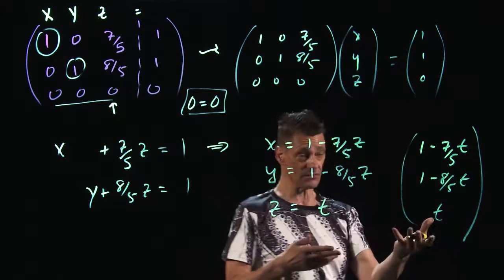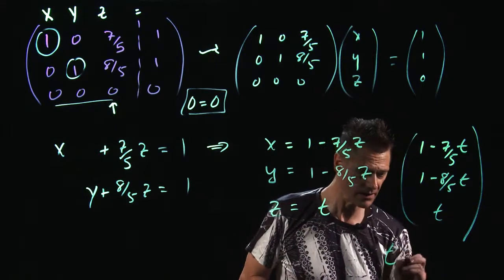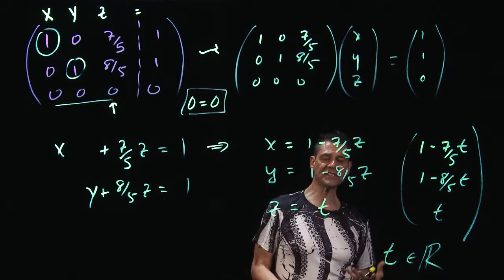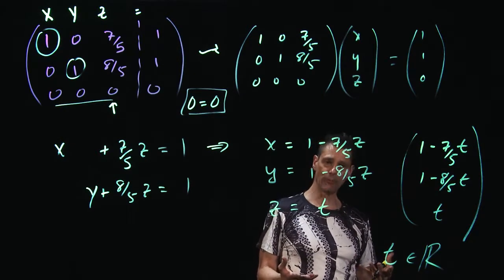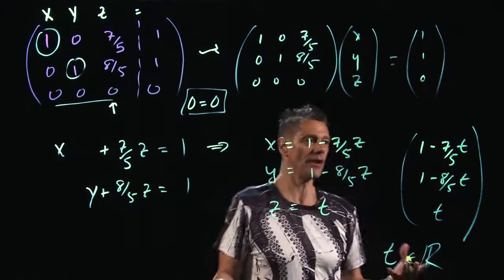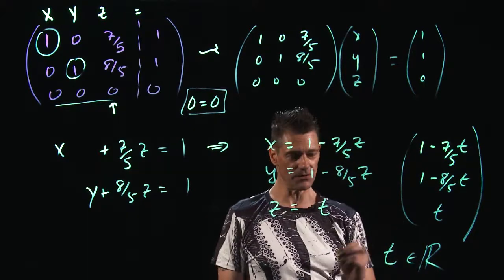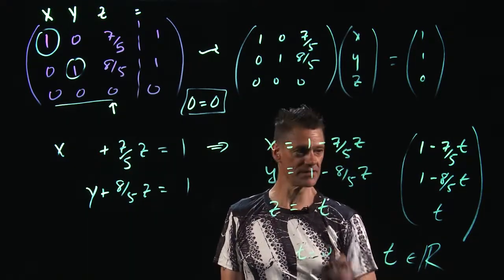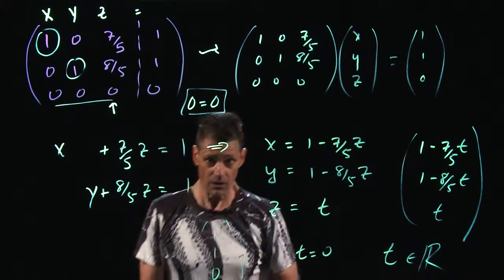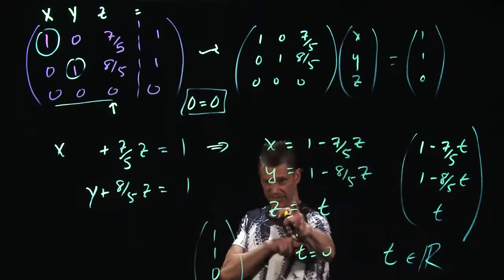And this, so here are the solutions to this. t is any real number. Let's pick a convenient t and then go back to the original equation set and see what's going on with this. How about t equals 0? If t is equal to 0, then this codes up as 1, 1, 0 is the solution. Let's check it out. Back soon.